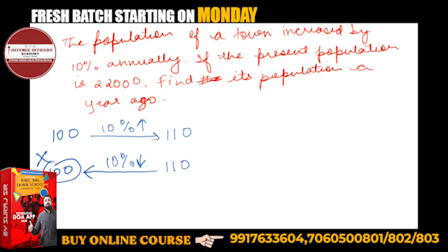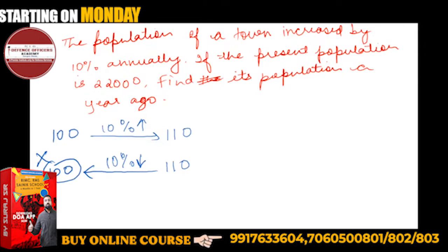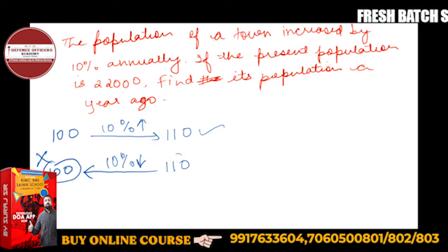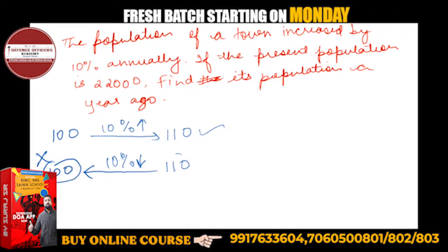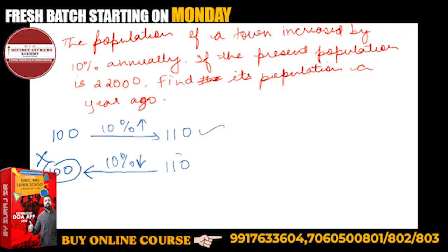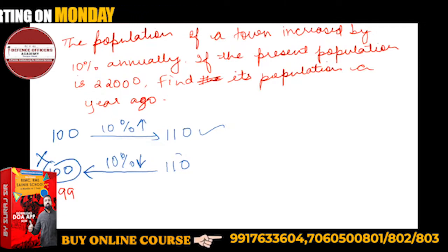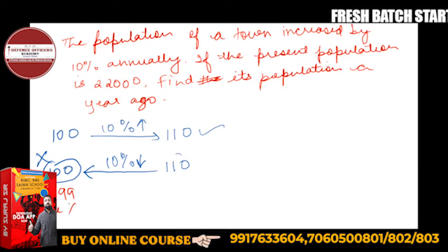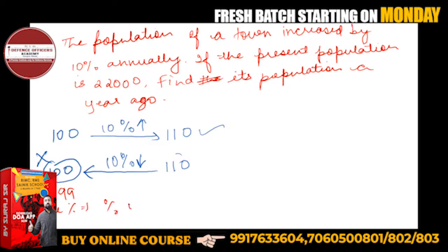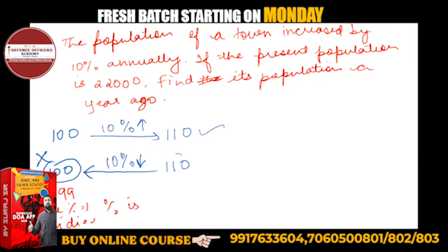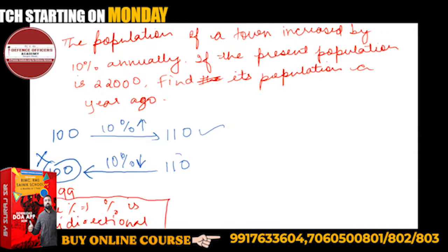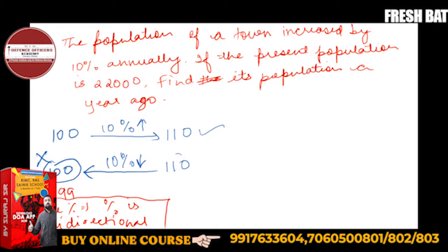When you are adding 10% to 100, you are adding 10% of 100, which is 10, and you get 110. But when you subtract 10% from 110, you subtract 10% of 110, which is 11, and when you subtract 11 you will get 99, not 100. When you are going to reverse you will get something else, not the same thing. Important note: percentage is unidirectional.